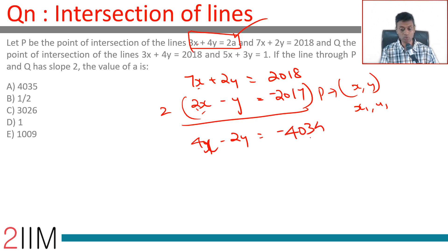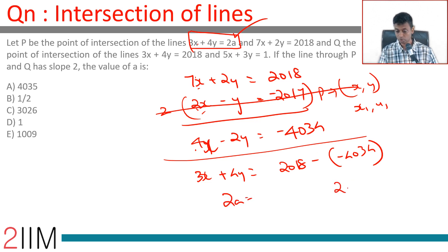Forget this, subtract this from this we will get 3x + 4y = 2018 - (-4034). This is 2a. 2a = 6052, or a = 3026.